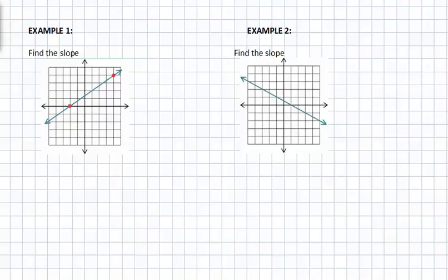So at this point, we notice that the line crosses at negative two, zero. And we're going to count up until we're horizontal with the other point at which the line intersects. So we're going to count up one, two, three, four. Now it's in line horizontally with the other coordinate point in which the line intersects. So this right here is considered our rise and it's four units.